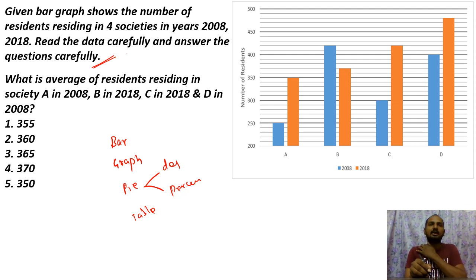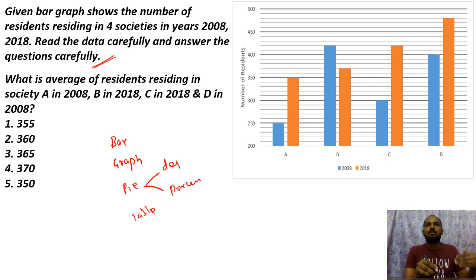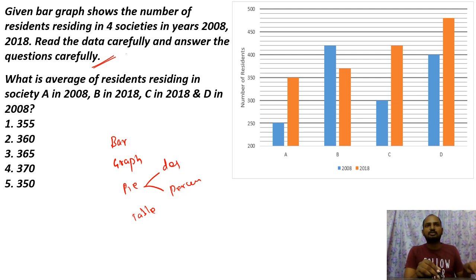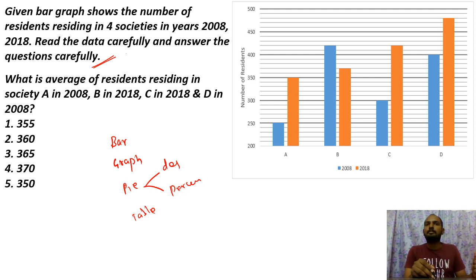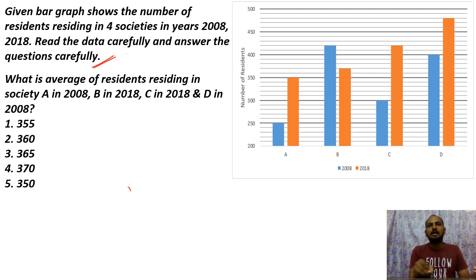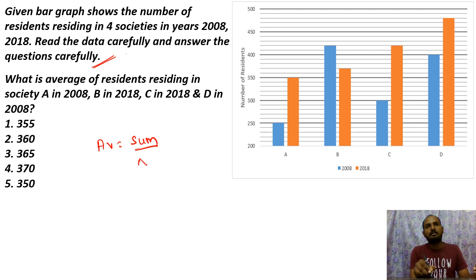For beginners watching for the first time — this is a memory-based question. If you look at the numbers: what is the average of residents residing in Society A in 2008, B in 2018, C in 2018, and D in 2008? The formula is: sum of the terms divided by number of the terms.